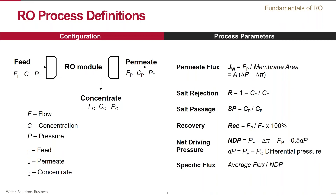Another important parameter is recovery — it describes what volume percentage of feed water is recovered as permeate. We already know what NDP is: net driving pressure, which is the pressure available to drive the feed water through the membrane minus the osmotic pressure and the permeate back pressure. We also add losses associated with flow along the membrane — dp, the difference between the feed and concentrate pressure, called differential pressure. Finally, specific flux characterizes the resistance of the membrane to water flow and is calculated by dividing the average flux by NDP — it is analogous to the water transport coefficient A in the RO transport equation.